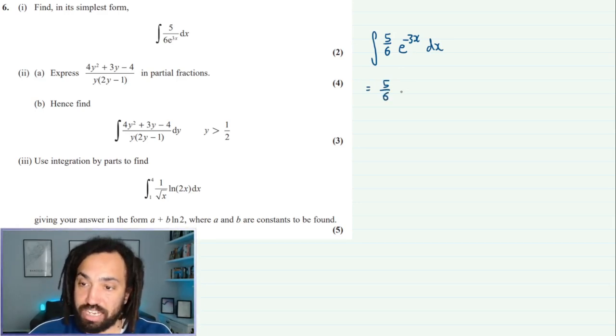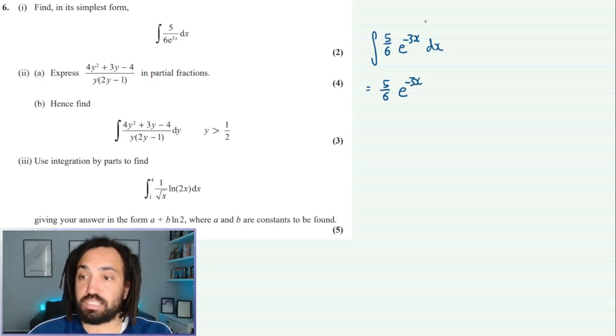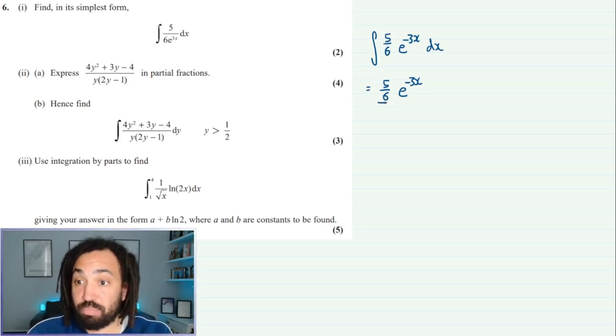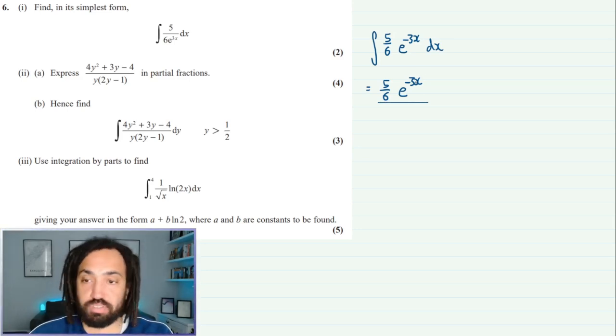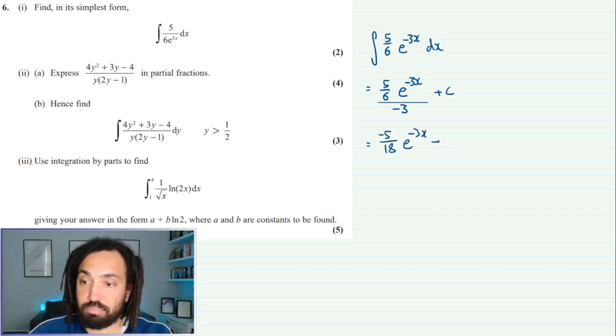Okay, so the constant will stay the same. When I integrate an e function, it integrates to itself, but if the input is something other than x, then we need to divide by the input's derivative. So I'm dividing by the derivative of minus 3x, which is minus 3, and then we get plus c. Tidying that up gives me minus 5 over 18 e to the minus 3x plus c.